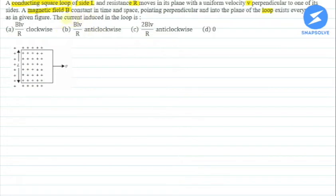The current induced in the loop is, and the options are: option A, BLV upon R clockwise; option B, BLV upon R anticlockwise; option C, 2BLV upon R anticlockwise; and option D, 0.